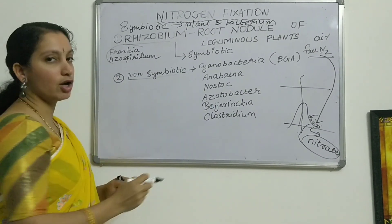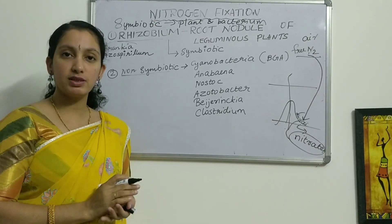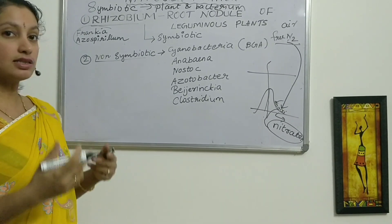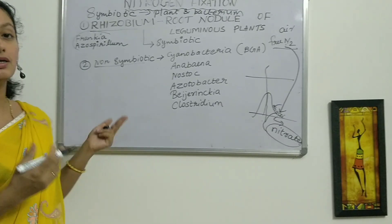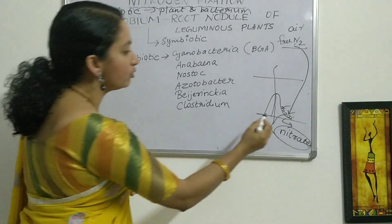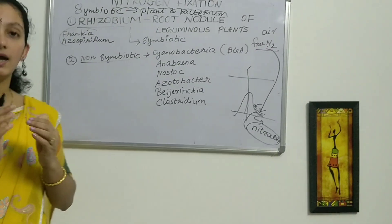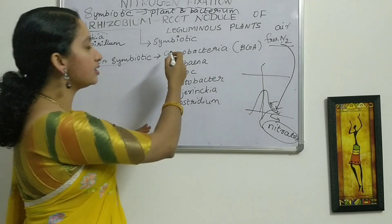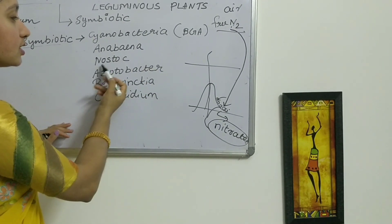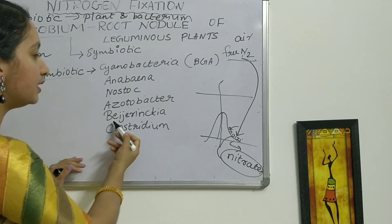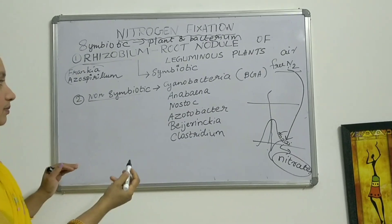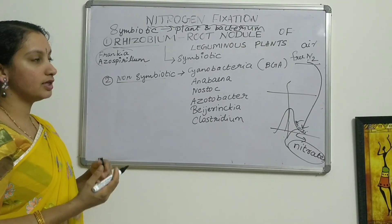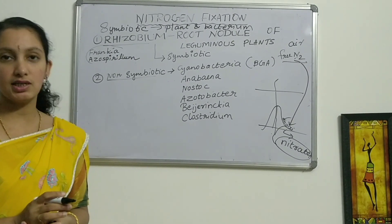The second type is non-symbiotic, which is the opposite — these bacteria do not undergo any symbiotic relationship with the plant. They are just living near the plant, not forming a symbiotic relationship, and you cannot expect them to reside inside the root nodule. Such bacteria include cyanobacteria. All these bacteria form no mutualistic relationship with the plant.